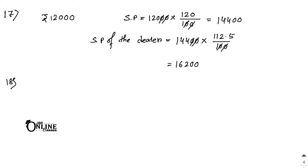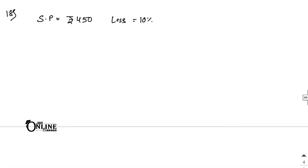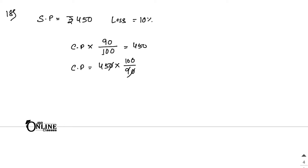Sum number 18: Find the cost price when SP equals rupees 450 and loss percentage equals 10%. So CP into 90 by 100 equals 450, therefore CP equals 450 into 100 by 90, which equals 500.